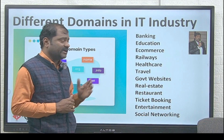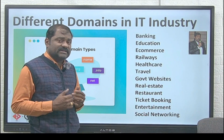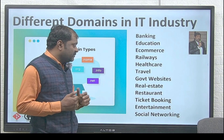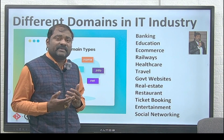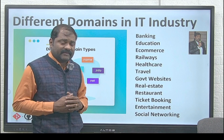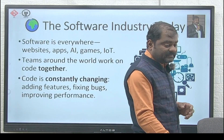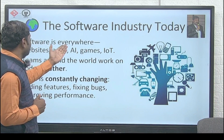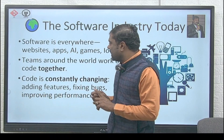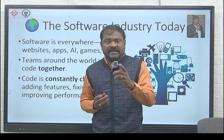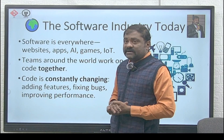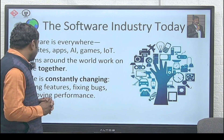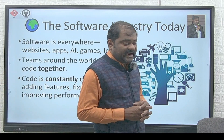In the IT industry, different domains are available in our real world — banking, education, e-commerce, railways, restaurants, healthcare, travel, government websites, real estate, ticket booking, entertainment, and social networking. So what is the software industry? Today software is everywhere, in the form of websites, apps, AI, and games. Teams around the world work on code together, and that code is constantly changing — adding features, fixing bugs, improving performance.